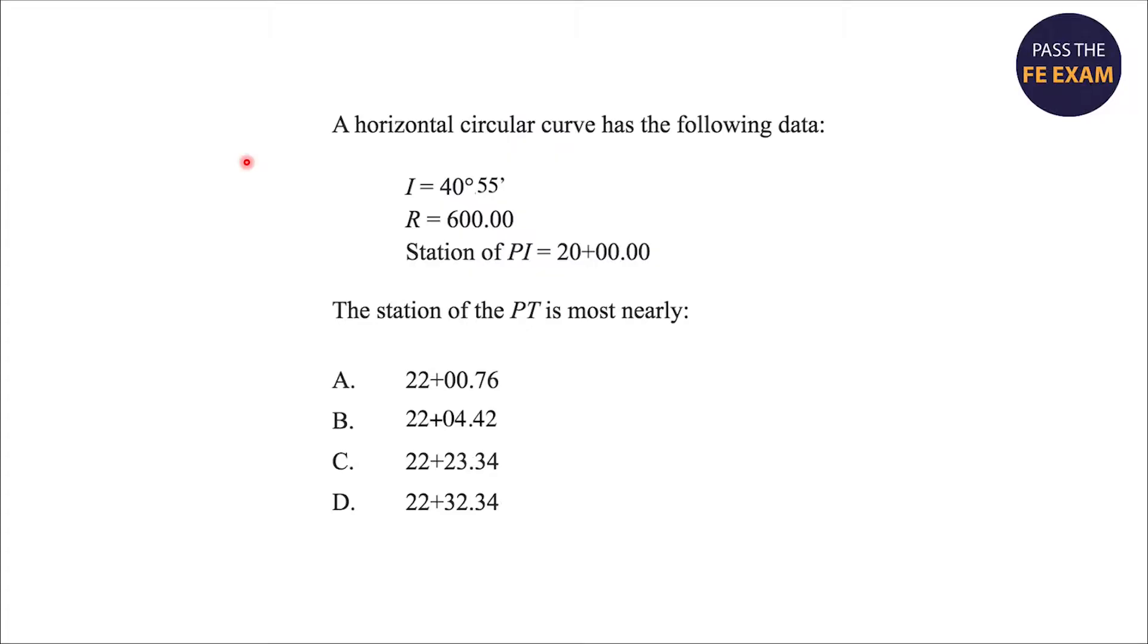Let's dive into our problem. A horizontal circular curve has the following data: I, or the deflection angle, is 40 degrees and 55 minutes. R equals the radius, which is 600, and the station of the point of tangent intersection, or PI, equals 20 plus 00.00.